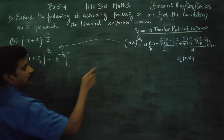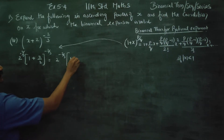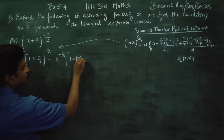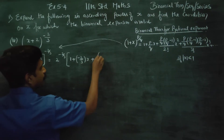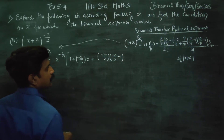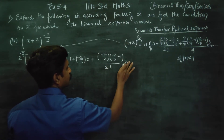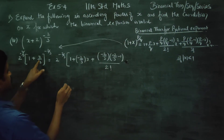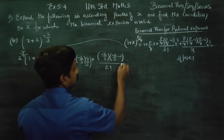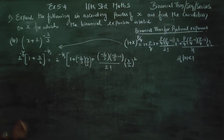We know that formula. In that formula, you will get the reference. What is my p by q? This is my p by q: minus 2 by 3. So: 1 plus (p/q) into x, that is minus 2 by 3 into x, plus (p/q)(p/q minus 1) divided by 2 factorial into x squared. In that formula, x is replaced by x by 2, so x squared becomes (x/2) whole squared.